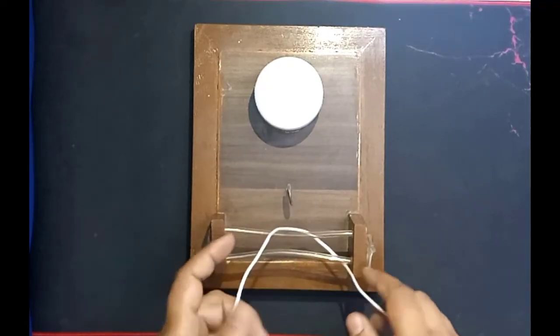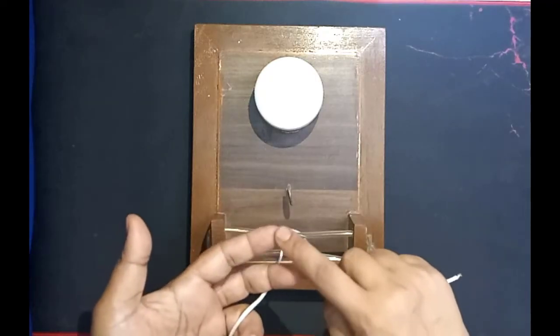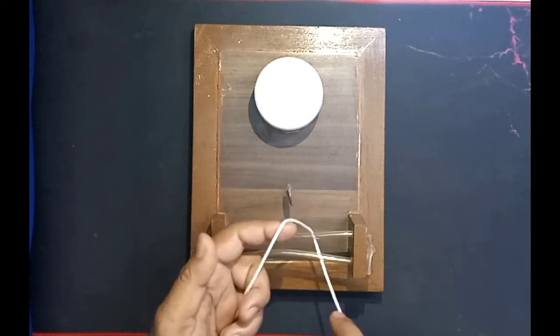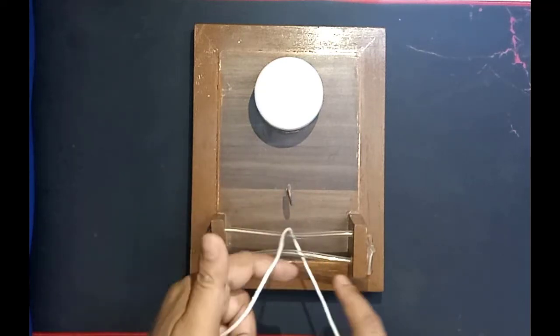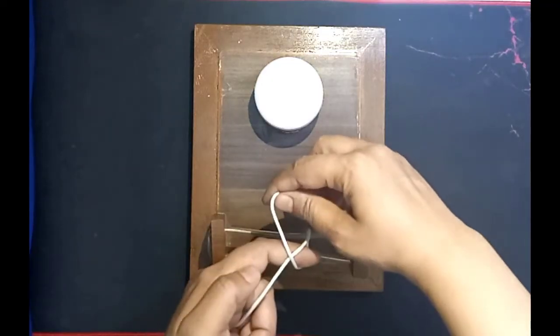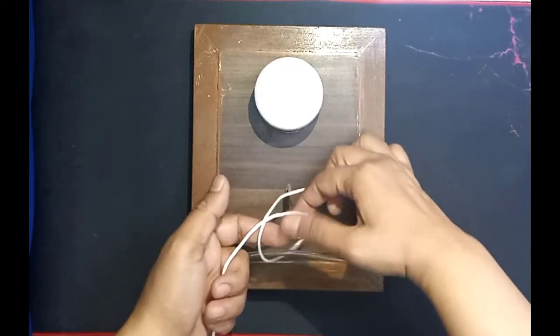For this knot we will make this by index finger and the middle finger. You can see I have passed my index finger underneath this string. Now I have to make a cross. By making this cross you can see that there is a creation of a loop.